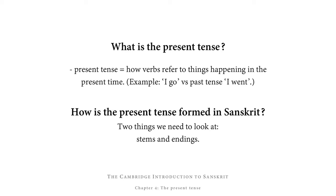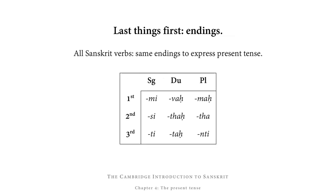Now if you want to know how the present tense is formed in Sanskrit, we need to look at two things, namely the verbal stem and the verbal endings. Let's look at the endings first, actually, because all Sanskrit verbs use the same endings to express the present tense.